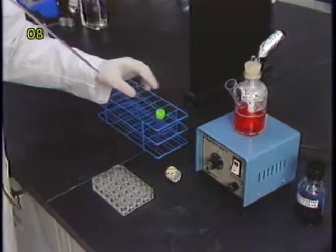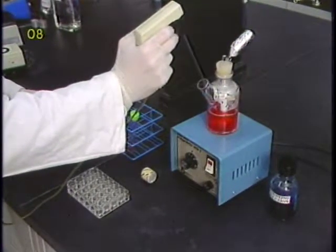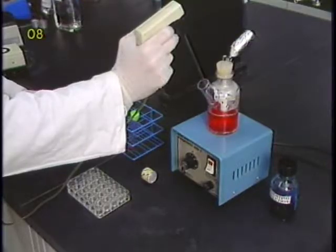As a general practice, whenever a sample is taken for cell count, another sample is placed in a 24-well plate for microscopic observation.